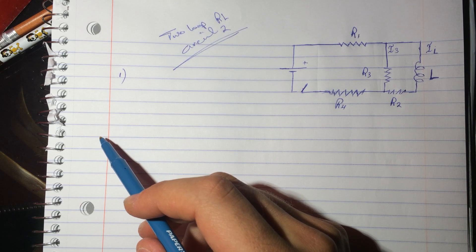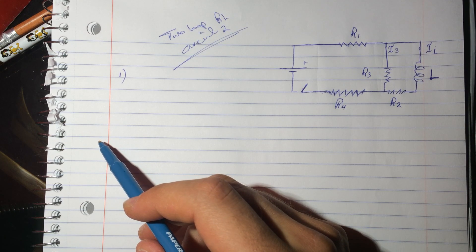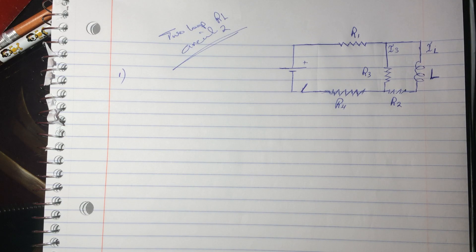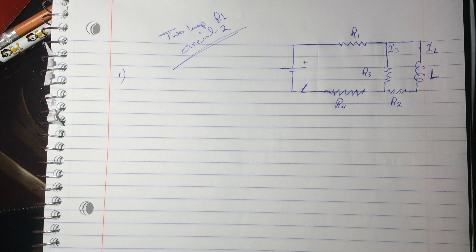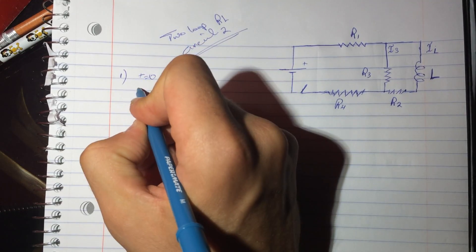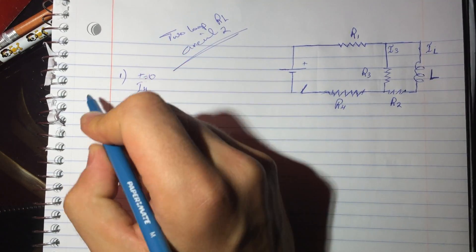The first question: the switch has been open for a long time. At t equals 0, the switch is closed. What is I4 — the magnitude of the current through resistor R4 at time equals 0?